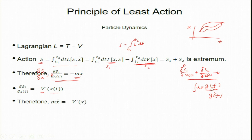Using the formulas and requiring that the sum equals zero at the extremum: −mẍ − V′(x) = 0, which gives mẍ = −V′(x). This is Newton's second law for a particle in a potential — the Euler-Lagrange equation derived rigorously via functional derivatives.